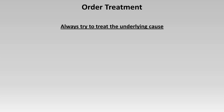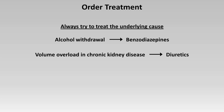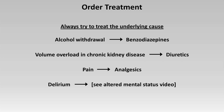The fourth step is to order treatment if indicated. The initial consideration is always to treat the underlying cause of hypertension. For alcohol withdrawal, give benzos. For volume overload complicating chronic kidney disease, this often responds well to diuretics. Give analgesics to patients in pain. And for patients who are hypertensive in the setting of delirium, see the related video on handling altered mental status.